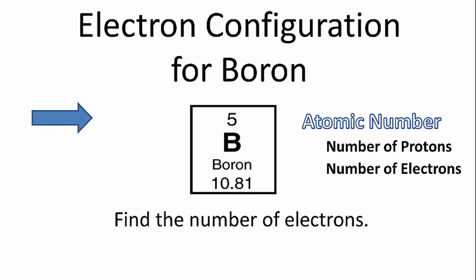To find the electron configuration for boron, we first need to find the number of electrons. We'll do that using the periodic table. We can look at the number above the element symbol, and that will tell us the number of protons. But it will also tell us the number of electrons.